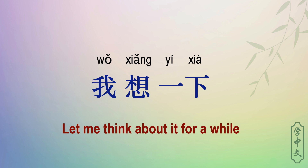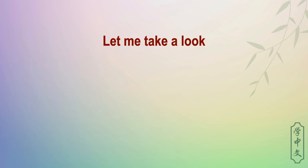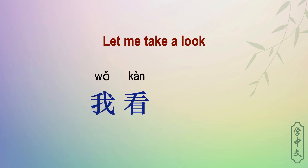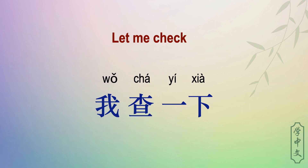Usually, if there isn't an object after a verb — like 'let me take a look' — it would be 我看, so there isn't an object. But Chinese people never just say 我看; it sounds so weird. They would say 我看一下 — let me take a little look. Let me check.